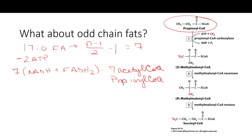Propionyl-CoA can then be converted to succinyl-CoA, but it costs us another molecule of ATP. So we have to remember we lose an additional ATP to convert propionyl-CoA to succinyl-CoA, bringing our deficit from 2 ATP up to 3 ATP.